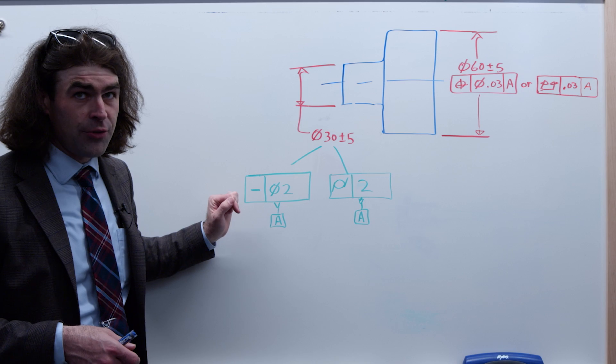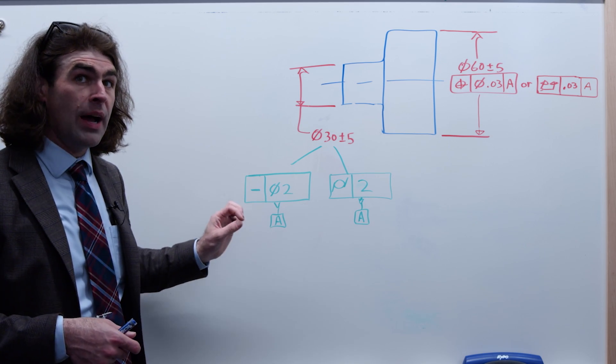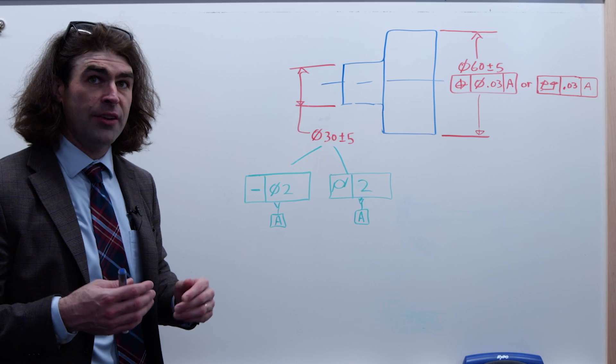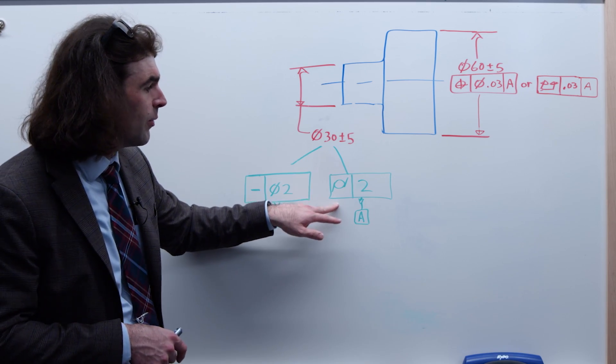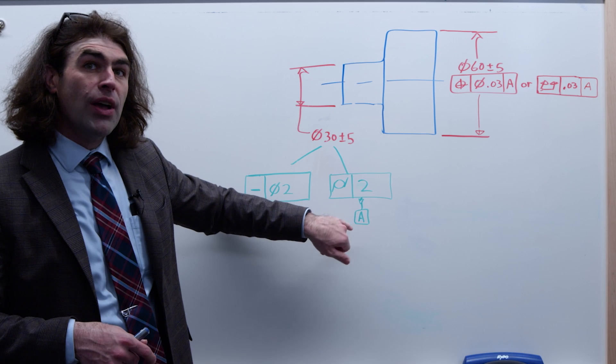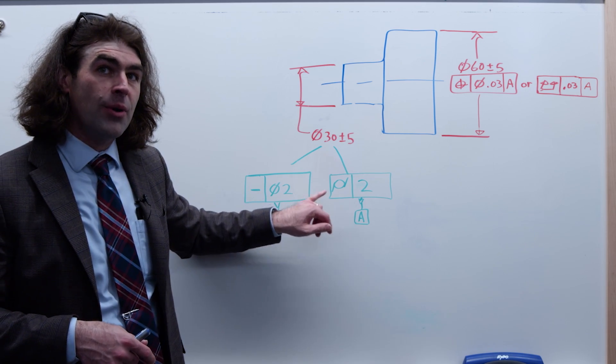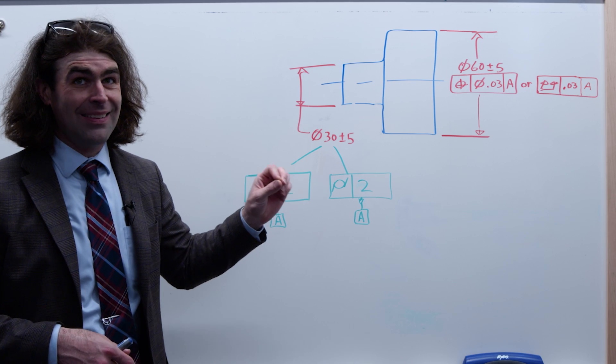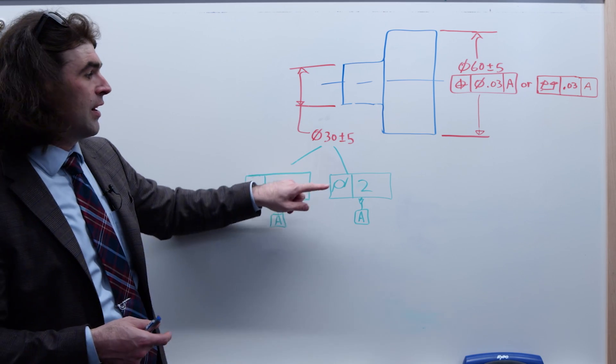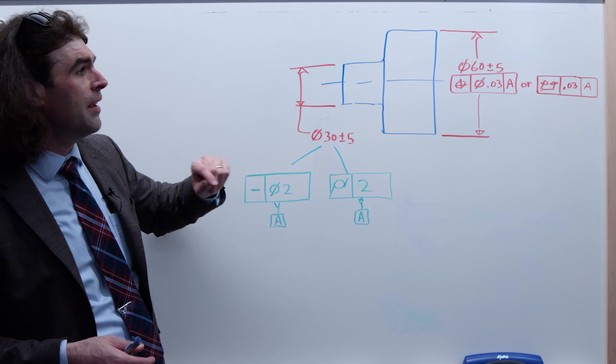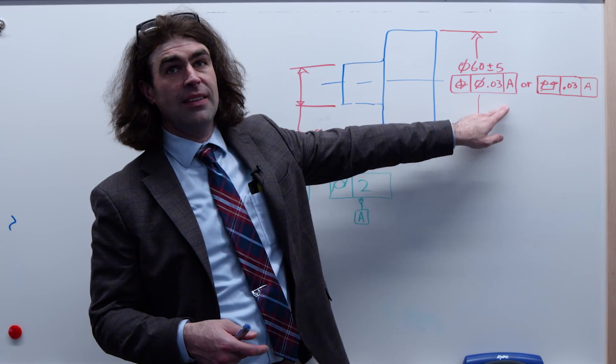Now straightness of the derived median line applies to a feature of size. What if it's applying to the surface? So here we have a cylindricity of two millimeters and now we've got our datum feature symbol on this, right? Not a feature of size control. We're controlling the surface. The same thing applies. We're going to verify this cylindricity and then we're going to inspect it the same.